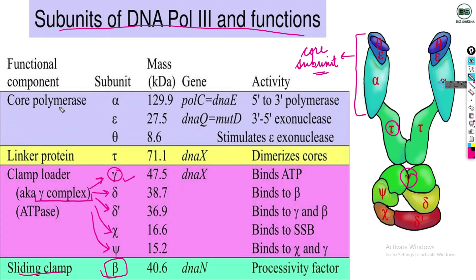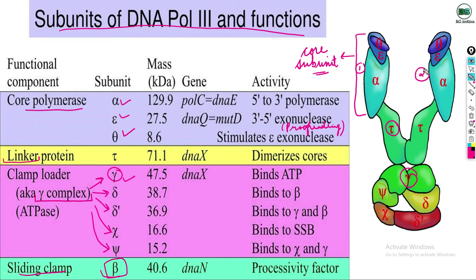Looking at the functions of each subunit: in the core polymerase, alpha performs 5' to 3' polymerization; epsilon performs 3' to 5' exonuclease activity, meaning proof reading; and theta helps epsilon in proof reading activity. Tau is the linker protein — it links and dimerizes the two core subunits, keeping them connected.